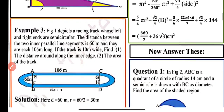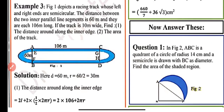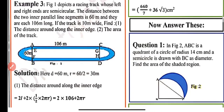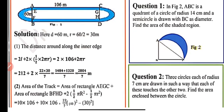Now example number 3. The figure depicts a racing track whose left and right ends are semicircular. The distance between the two inner parallel line segments is 60 meters, and each parallel segment is 106 meters long. The track is 10 meters wide. We need to find the distance around the track along its inner edge and the area of the track.